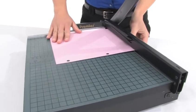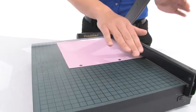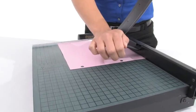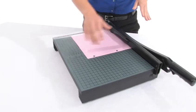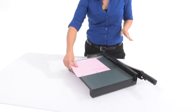So I'm going to show you how we use this. I'm going to hold down the clamp and this can cut up to 30 sheets of paper.